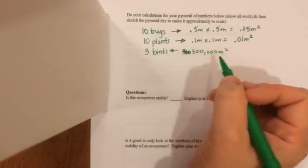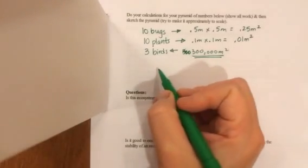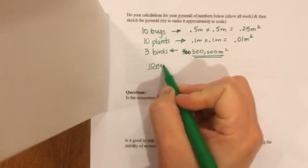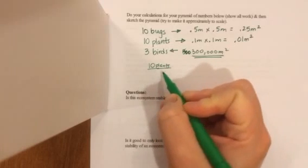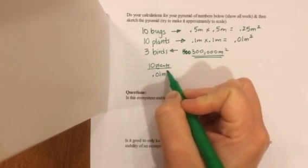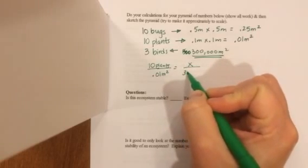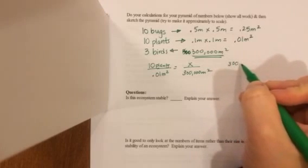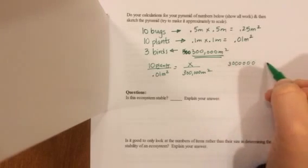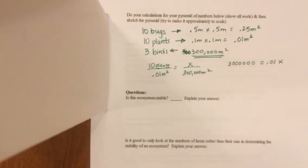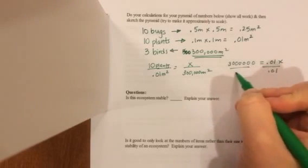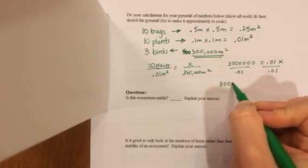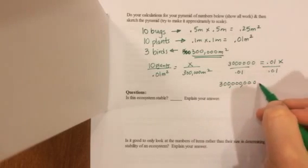So then what I did is I had to scale everything up to this 300,000 meters squared. So I take 10 plants is found in 0.01 meters squared. How many plants would be found in 300,000 meters squared? And when I cross multiply, I get that. Divide both sides by 0.01, and I end up with this where I get 300,000,000 plants.